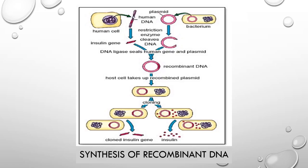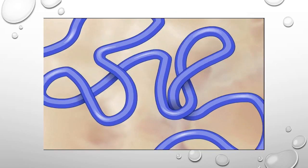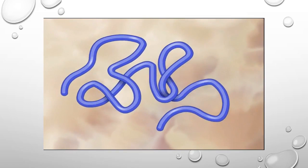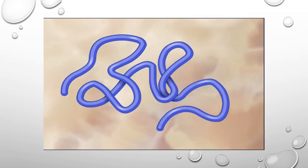This recombinant DNA technology has made wonders in genetics and biotechnology. In the next lecture, we will talk about the applications of genetic technologies. One of the first genetic engineering experiments was conducted by Stanley Cohen and Herbert Boyer in 1973. They showed that the gene for frog ribosomal RNA could be transferred and expressed in bacterial cells.